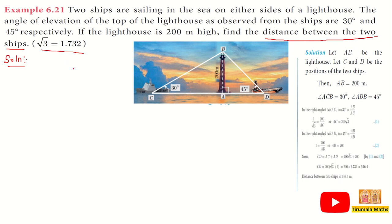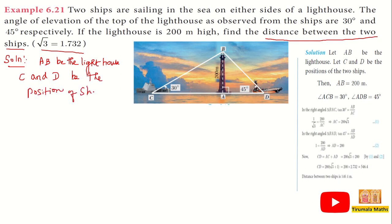Let AB be the lighthouse, where AB is the height. C and D are the positions of the two ships. AB is equal to 200 meters, which is already given.